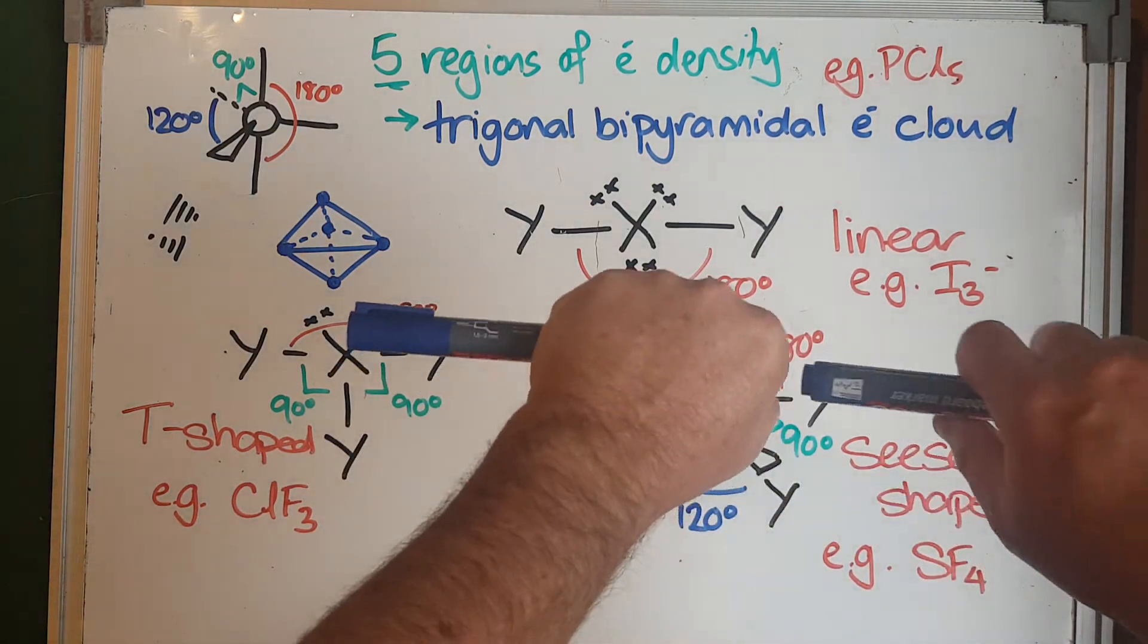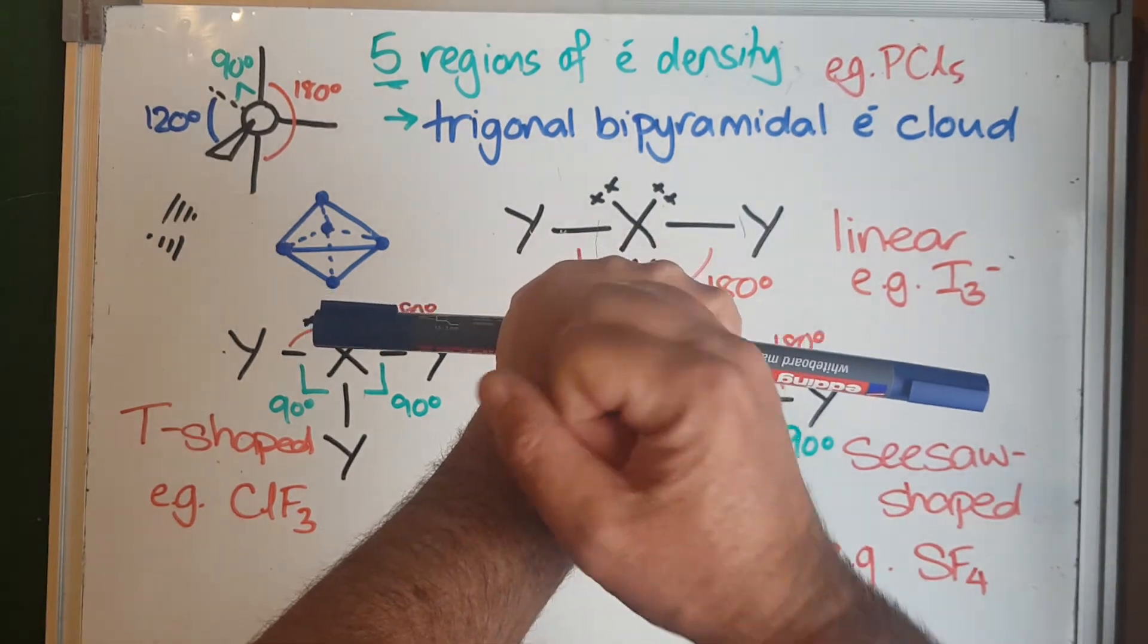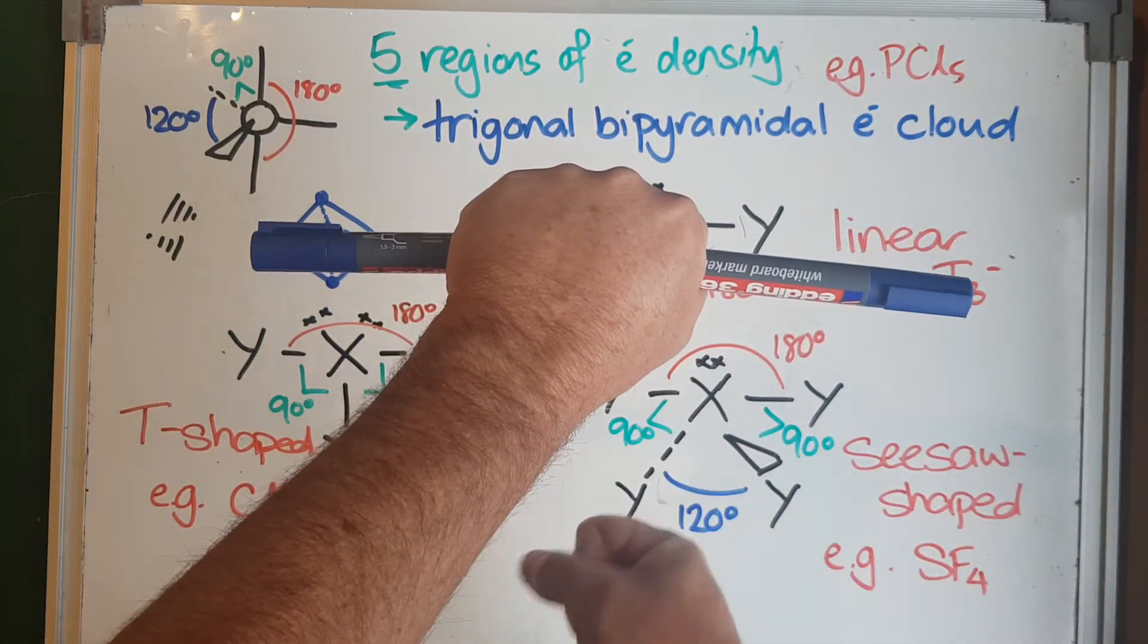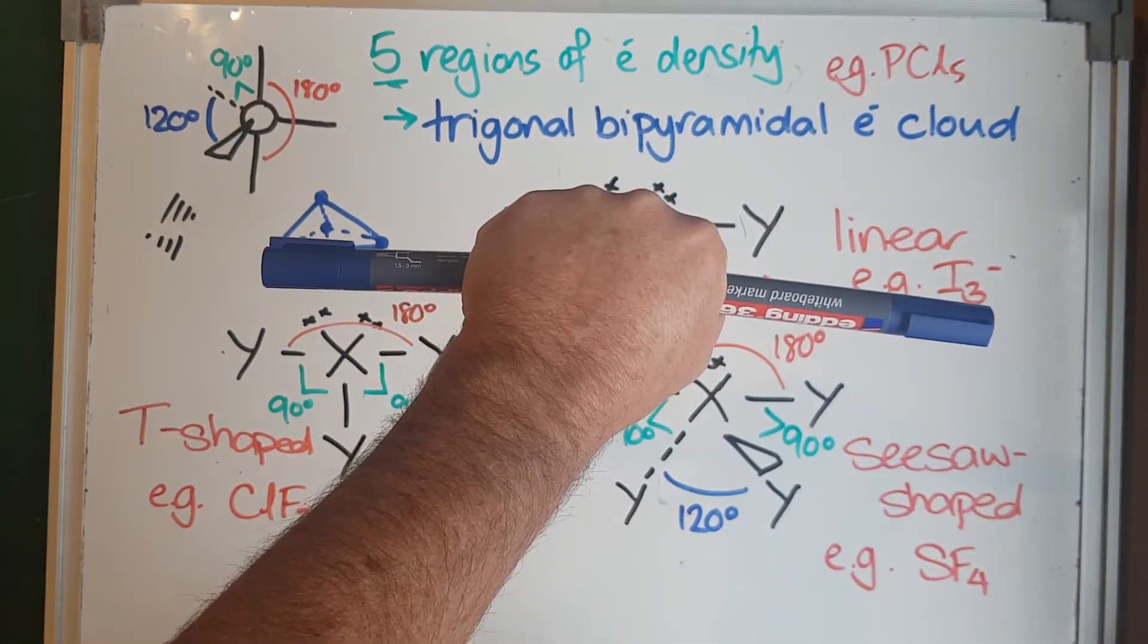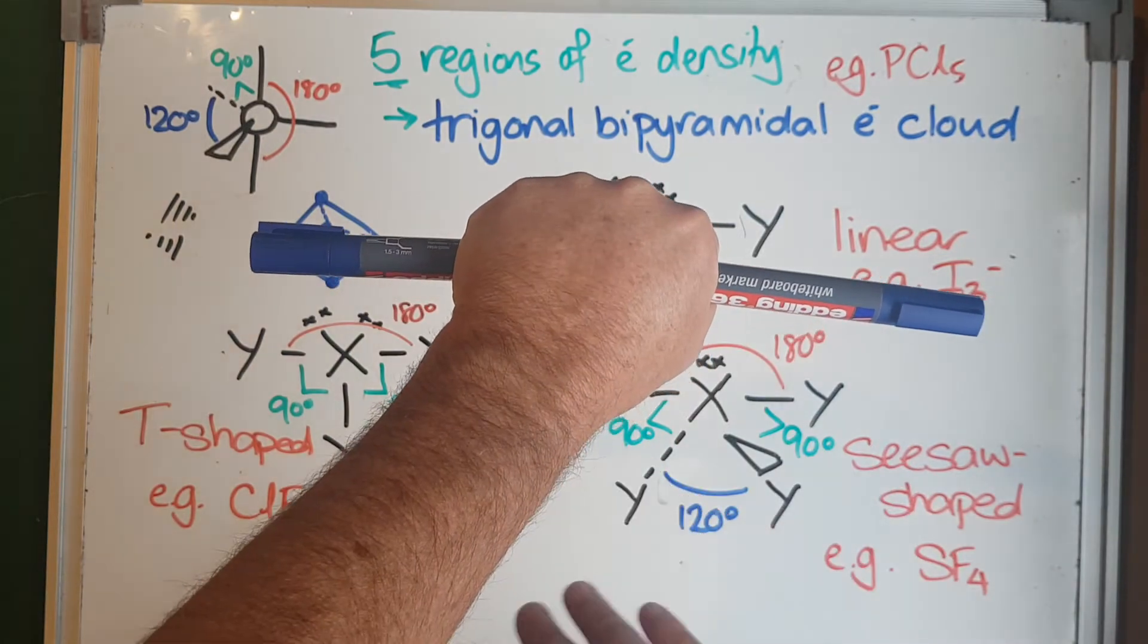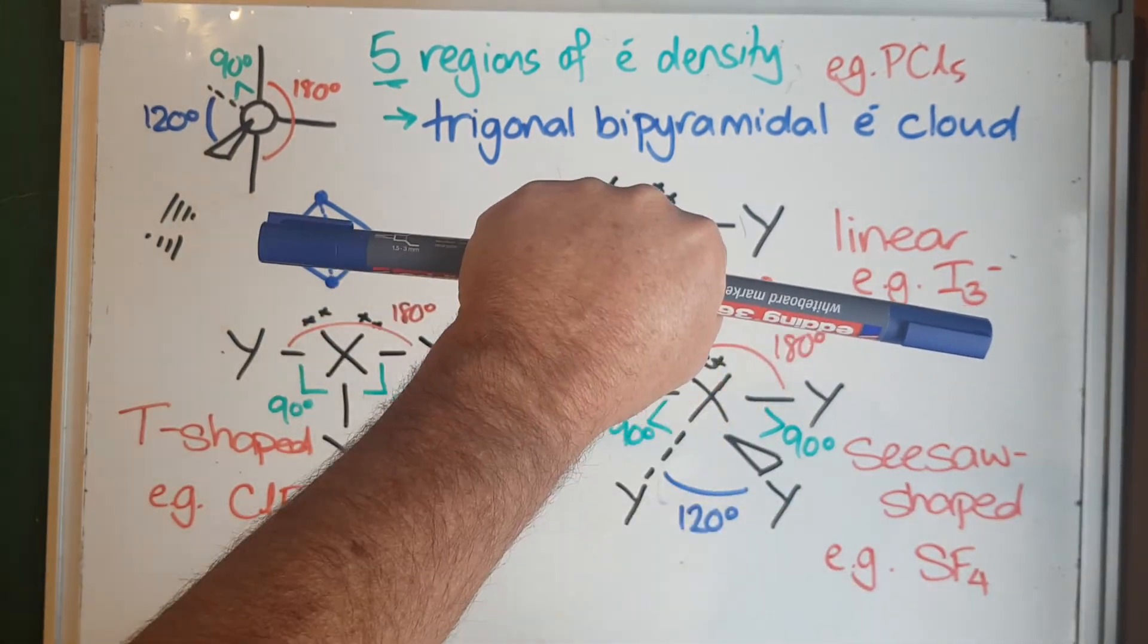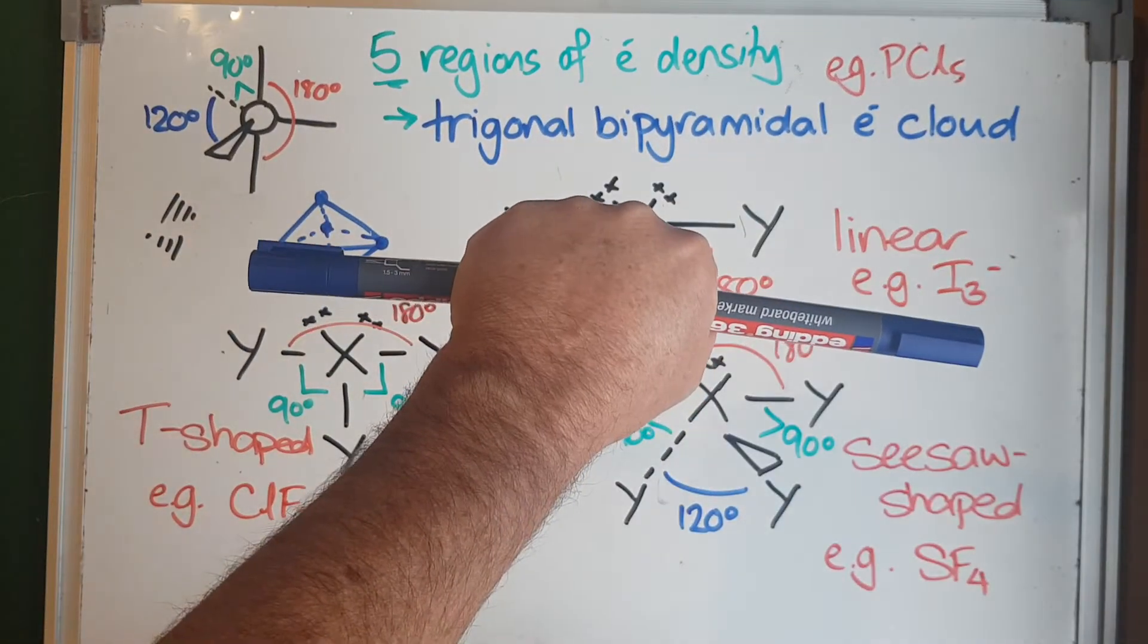If I've got my iodine in the middle and my other two iodines either side, we've got a lone pair of electrons sticking out this way, a lone pair sticking out that way, and a lone pair straight down. They're all 120 degrees away from each other and repelling each other as far away as they can. These two bonding pairs of electrons are 180 degrees away from each other, so that's really stable—more stable than any other arrangement.